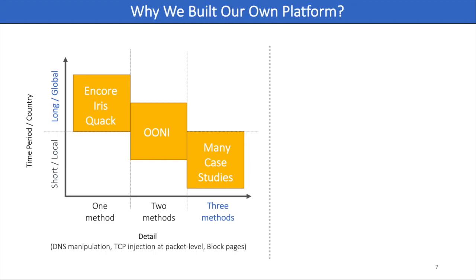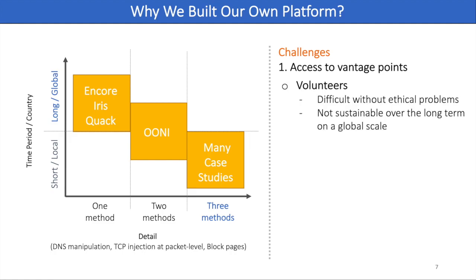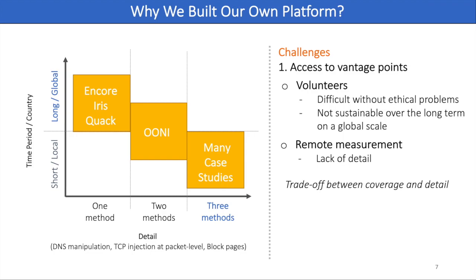One of the challenges of current studies is to get access to vantage points. As we need to be inside the network to see how a censor behaves, it is difficult to measure censorship happening in places far away from us. Many case studies rely on volunteers to run measurements, but there are ethical concerns that volunteers can get into trouble for accessing illegal web pages on our behalf. Also, it is hard to extend the time period and the number of regions. While remote measurements such as Kwok allow good coverage on time period and countries, they lack detail. There is a trade-off between coverage and detail, and due to lack of measurement detail, existing detectors are error-prone.